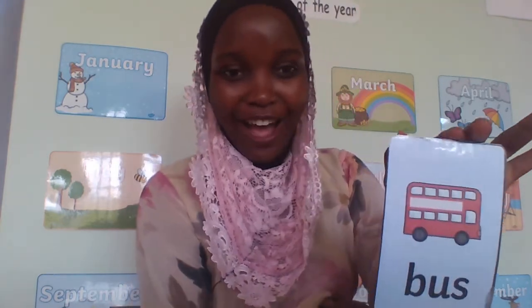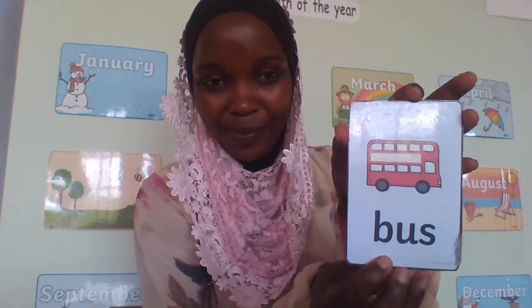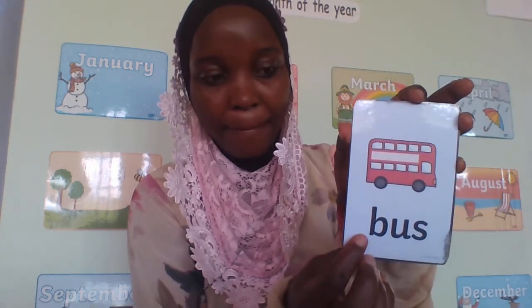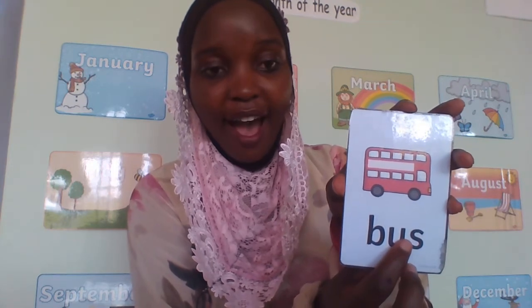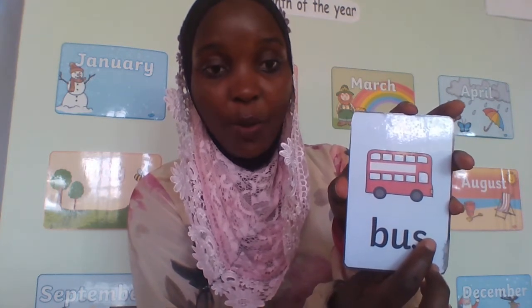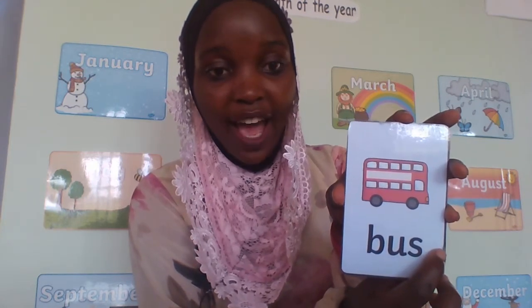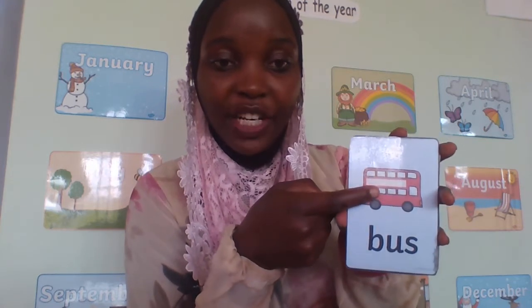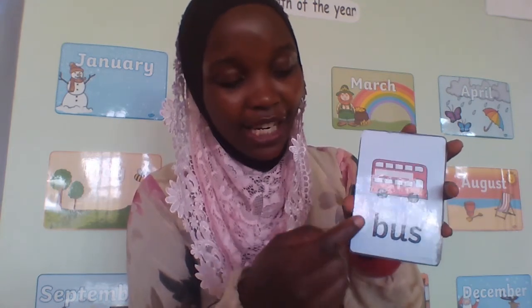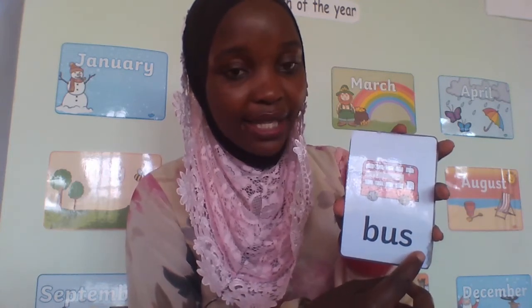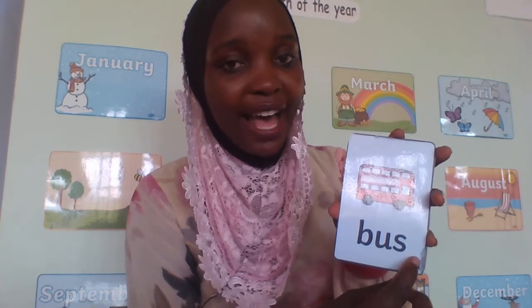How about this one? Wow, surprise! What is this? It's 'bus'. Can we spell the word? B-U-S, the word is 'bus'. Can we look at the picture of the bus? This is a picture of a bus. Do you know bus, children? Can we spell it again? B-A-S, the word is 'bus'.